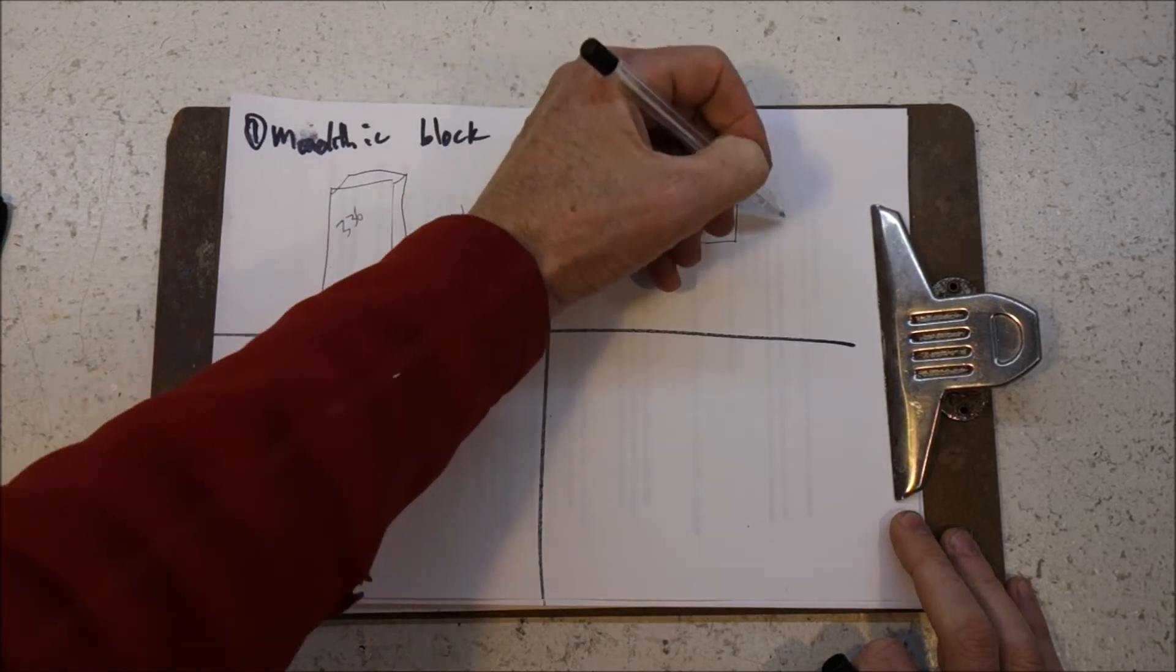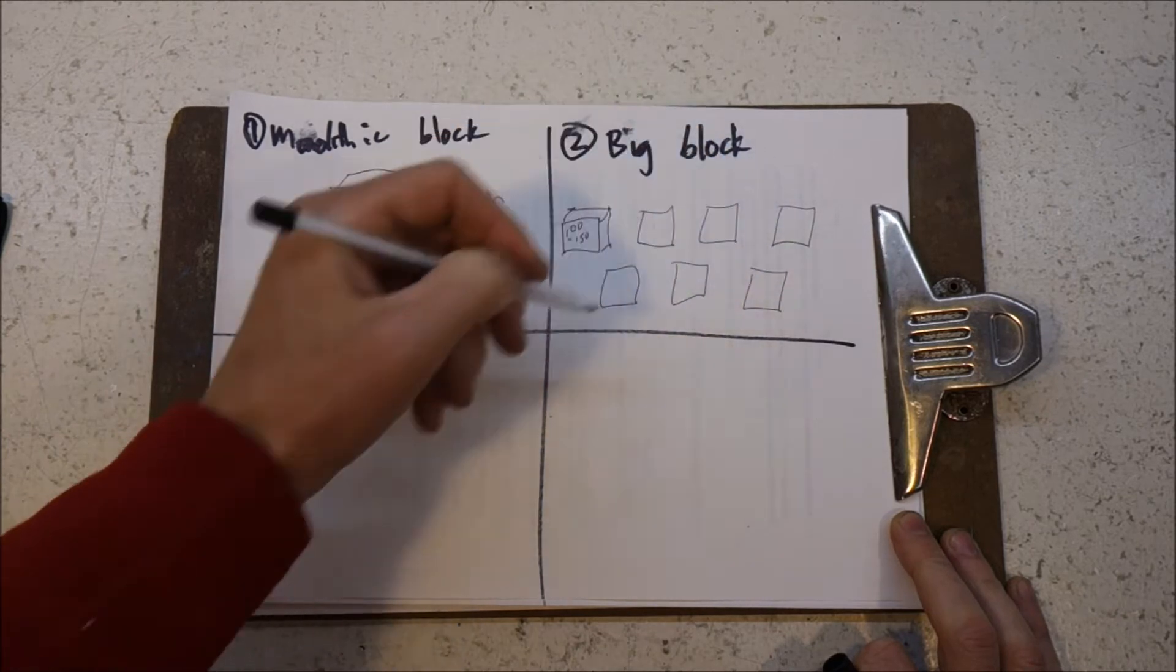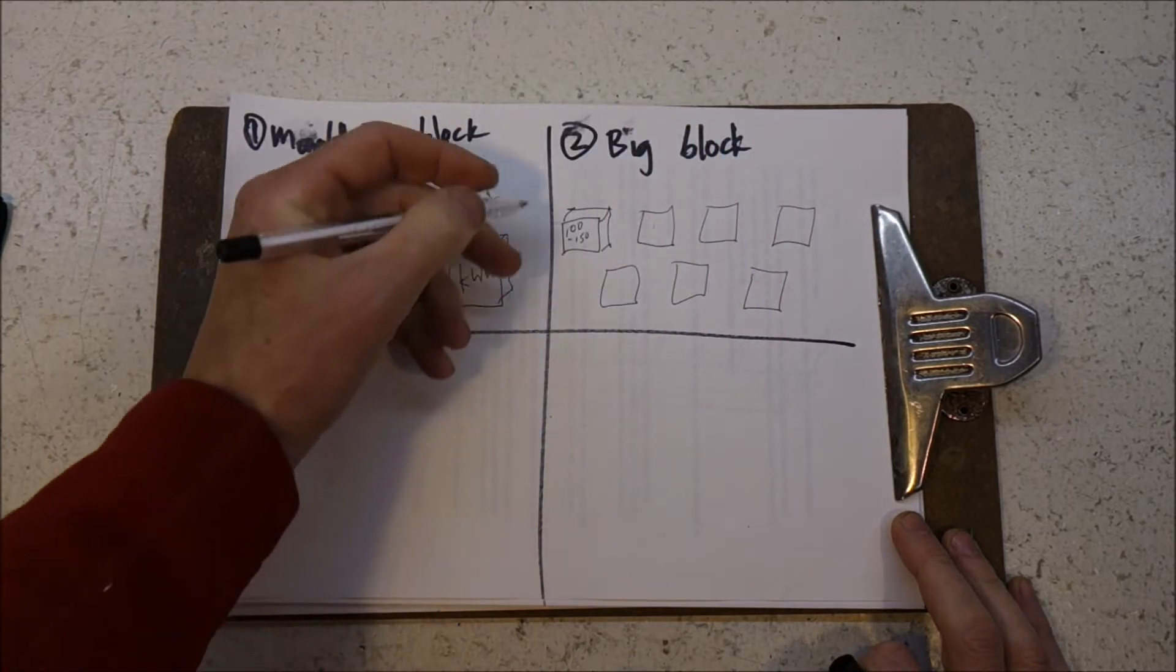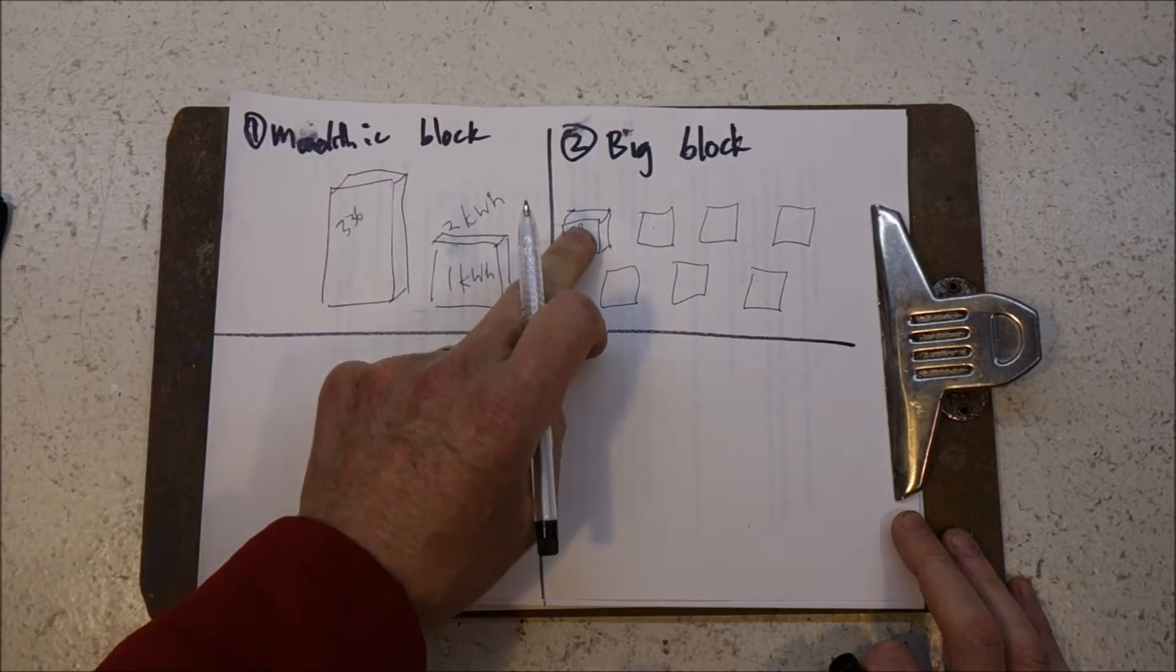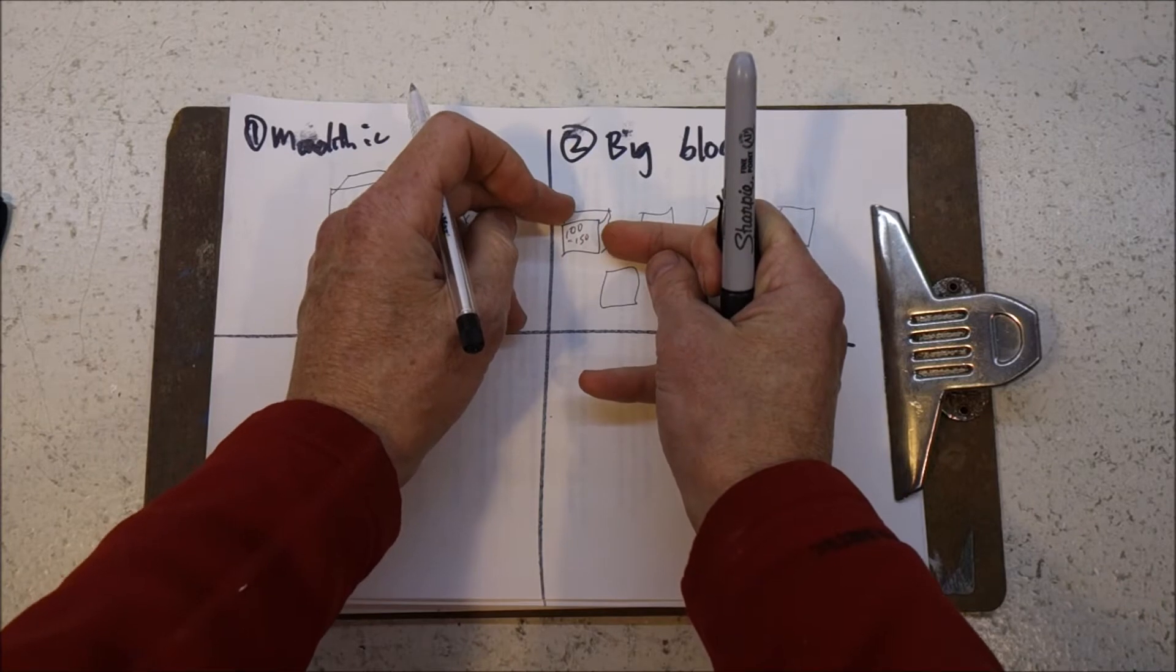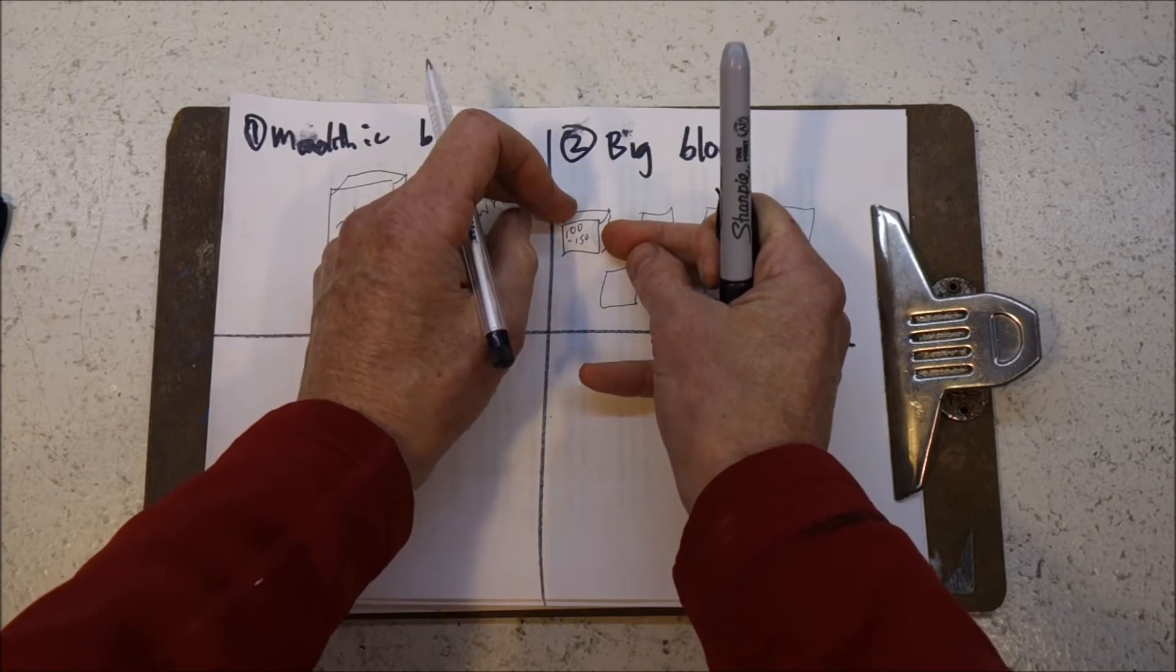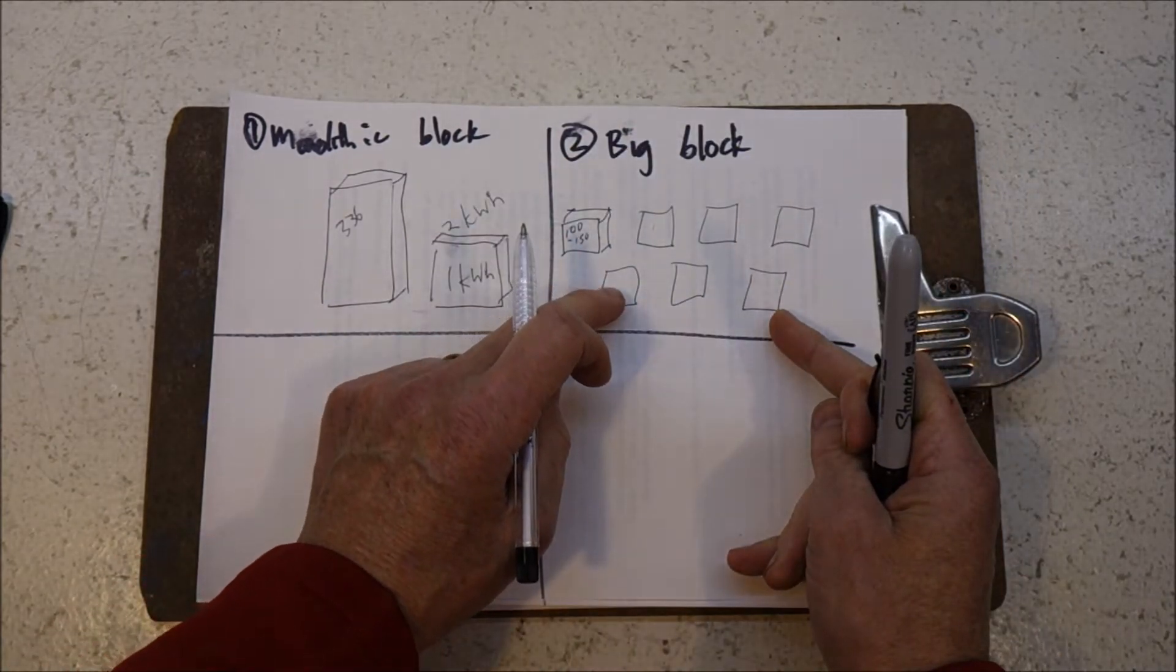And then you have, say, seven of those to make a 24 volt, 25 volt pack. So this has the advantage that it's conceptually quite simple. You connect up a whole bunch of batteries, all in parallel, and then you have these seven discrete blocks.